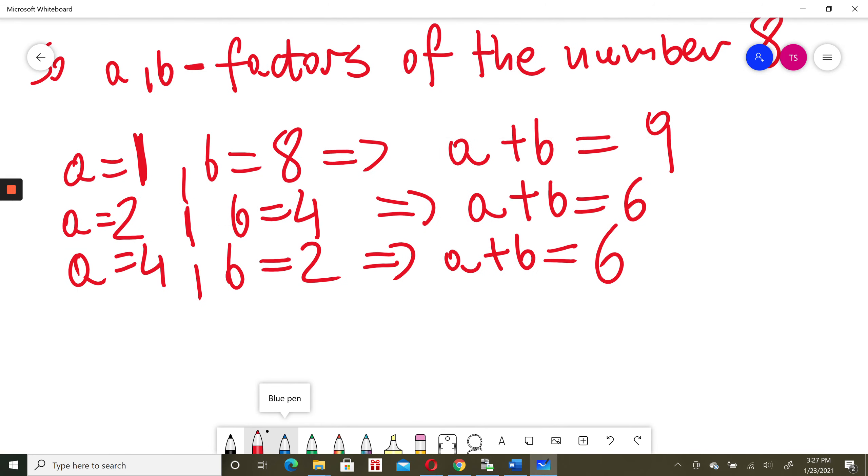And last possibility, a could be 8, and b must be 1 then. 8 times 1 will be 8. So then a plus b would be, 8 plus 1 would be 9.